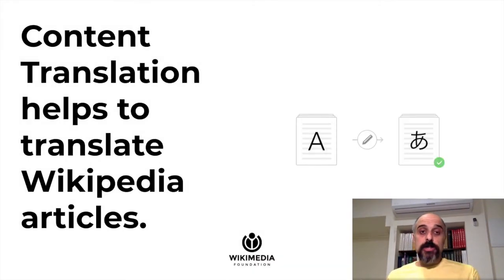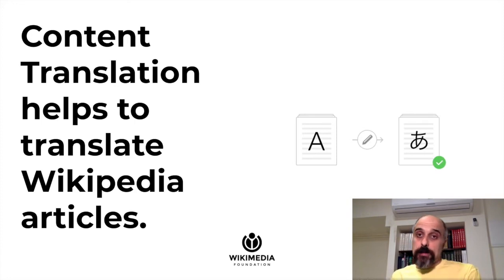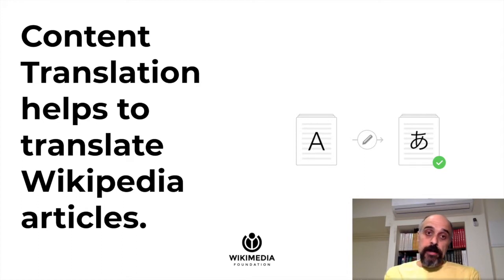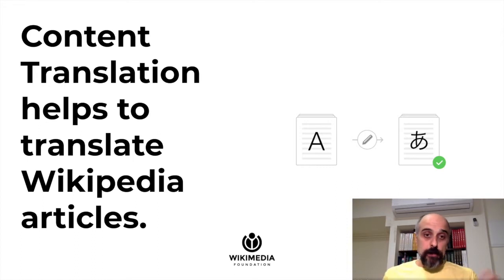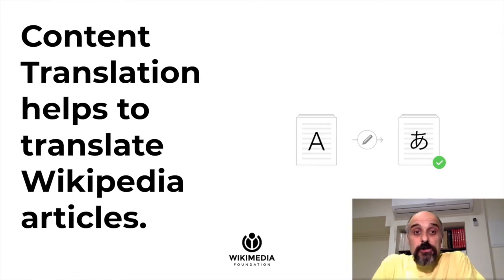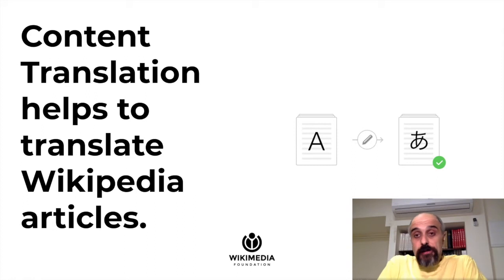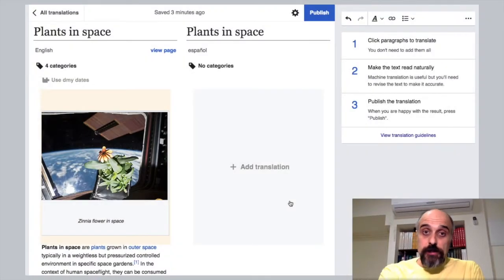Content translation is what our team is trying to do to address that. We've been doing that since 2014 and first deployed it in 2015. Since then, it has been growing and people have been using it to create a lot of articles. It's certainly not the only tool to help people contribute knowledge in more languages, but it's one of the most notable tools for helping knowledge propagate across languages and different Wikipedias.